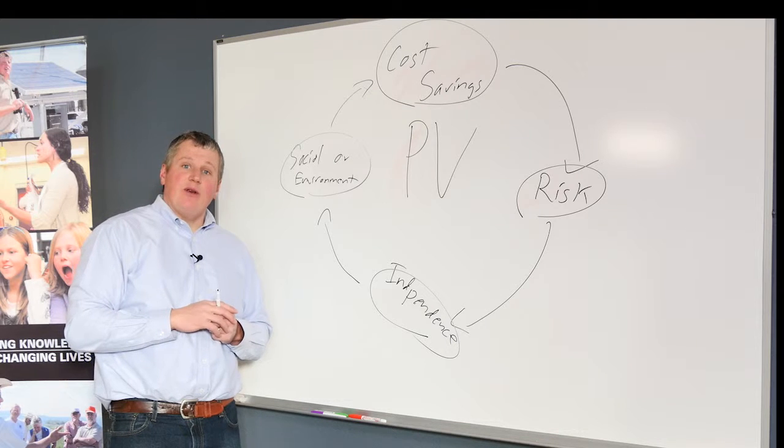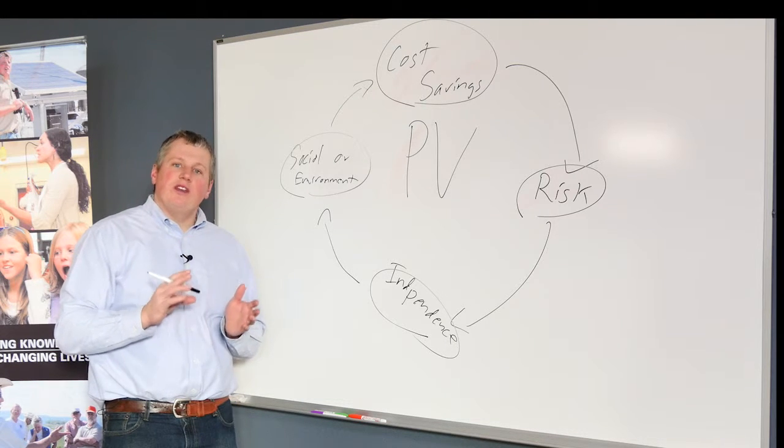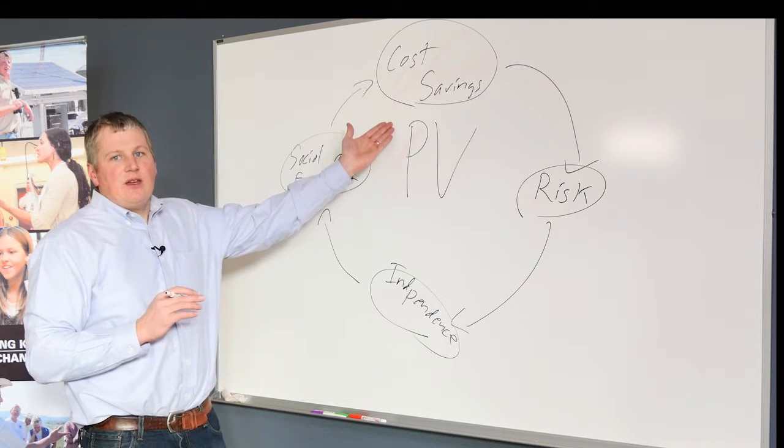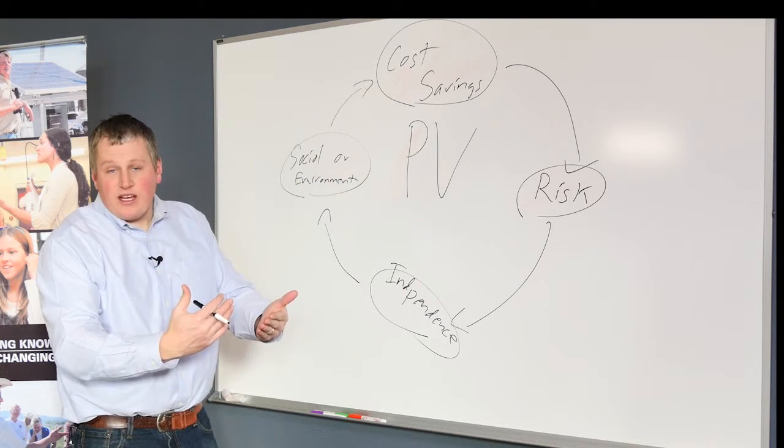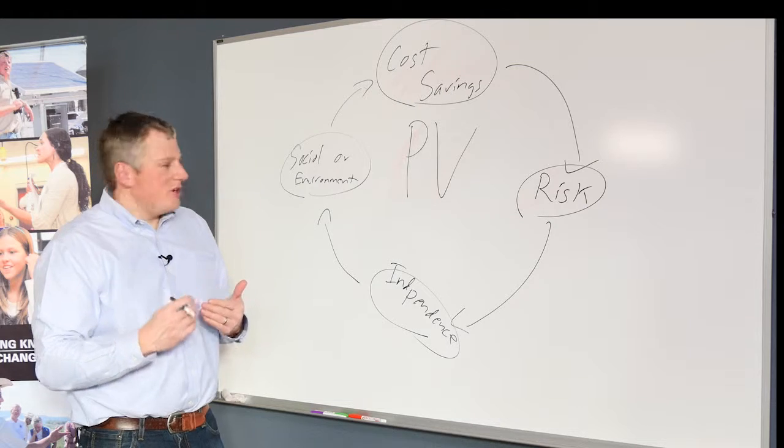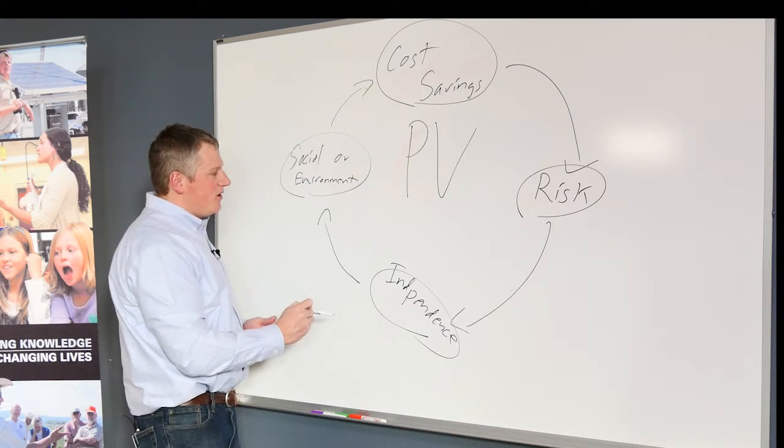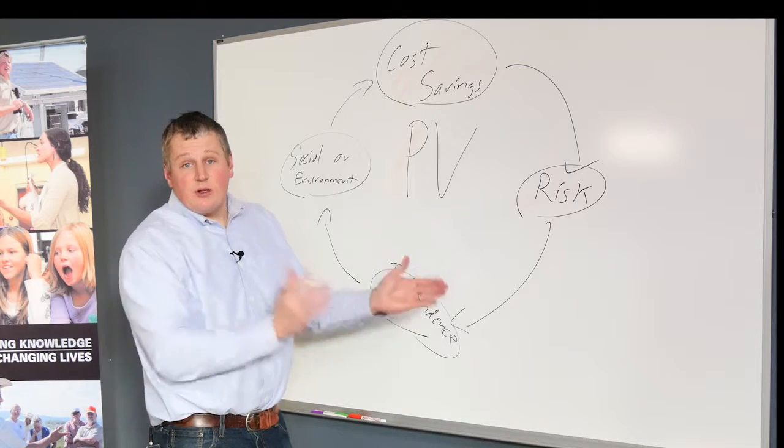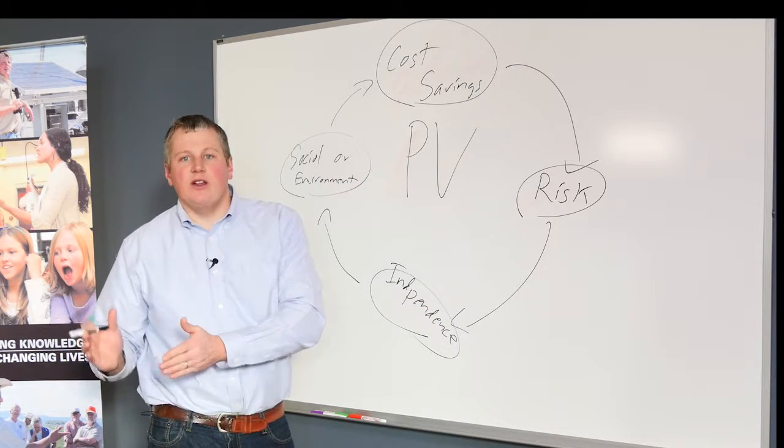What this basic diagram reveals is that each of you will have your own individualized rate of return. If you only value cost savings, you may ask a photovoltaic system to have a higher rate of return than if you value social or environmental aspects, independence, or even risk abatement. So what is a suitable return for one person may not be a suitable return for another.